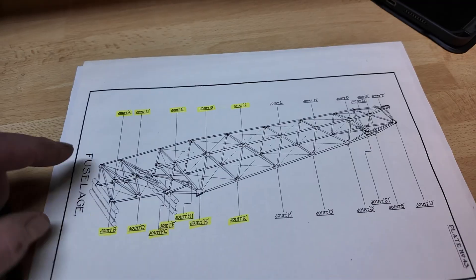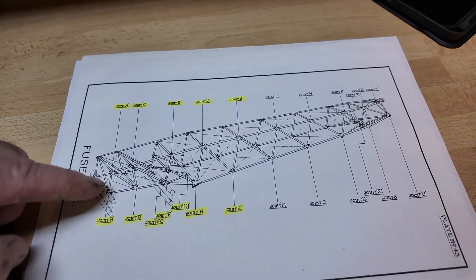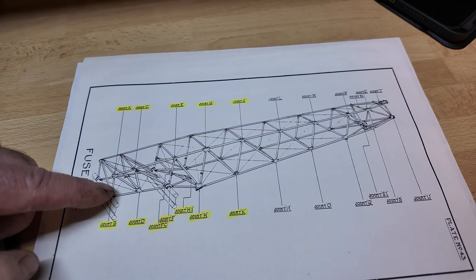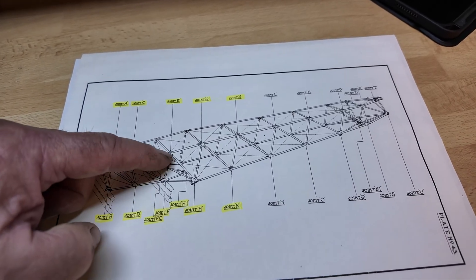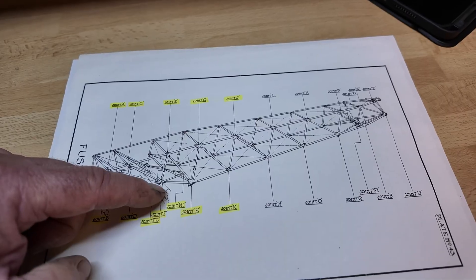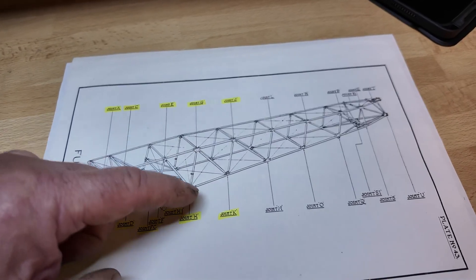And what you've got is they're lettered. So you've got A, and this is a mirror image on each side. So you've got A, B, C, D, E, F, G, H.